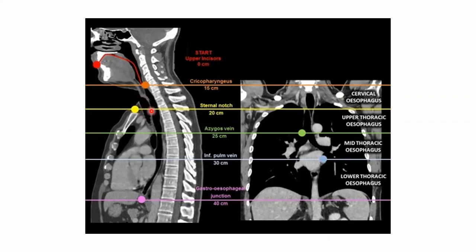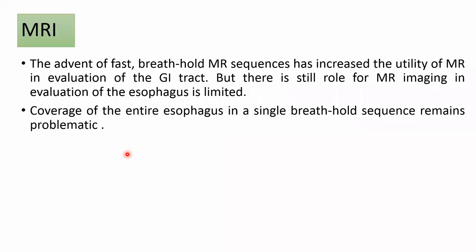This sagittal and coronal CT shows the anatomical parts of the esophagus. Regarding MRI: the advent of fast breath-hold MR sequences has increased the utility of MRI in evaluating the GI tract, but the role of MR imaging for the esophagus remains limited; coverage of the entire esophagus in a single breath-hold sequence remains problematic.